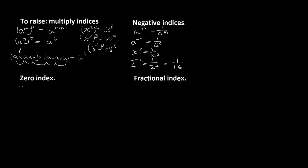For a zero index: a to the power of 0 equals 1. x to the power of 0 equals 1. z to the power of 0 equals 1. 247.65 to the power of 0 equals 1. Anything to the power of 0 equals 1.